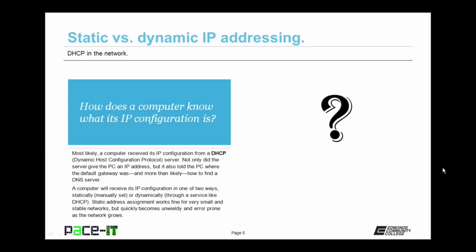How does a computer know what its IP configuration is? More than likely, a computer received its IP configuration from a Dynamic Host Configuration Protocol server. Not only did the server give the PC an IP address, but it also told the PC where the default gateway was and how to find a DNS server. A computer will receive its IP configuration in one of two ways — either statically, meaning manually set, or dynamically through a service like DHCP. Static IP address assignment works fine for very small and stable networks, but quickly becomes unwieldy and error-prone as the network grows.